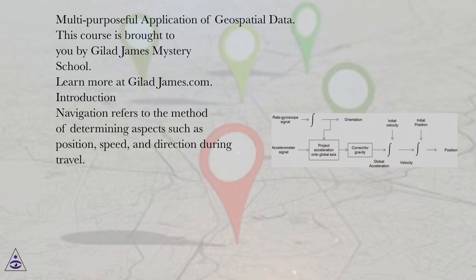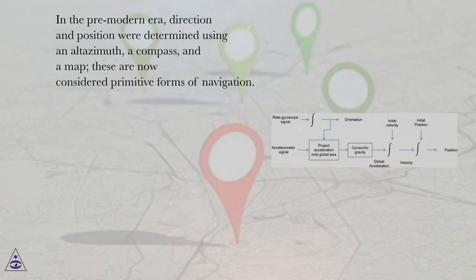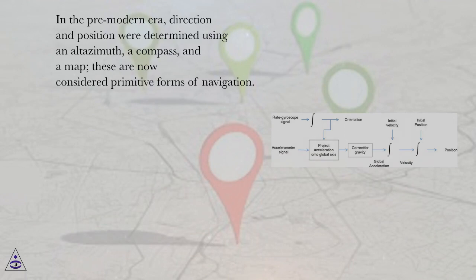Navigation refers to the method of determining aspects such as position, speed, and direction during travel. In the pre-modern era, direction and position were determined using an altasmuth, a compass, and a map. These are now considered primitive forms of navigation.